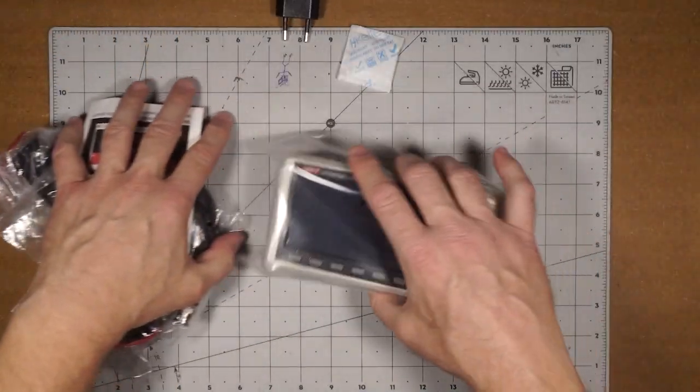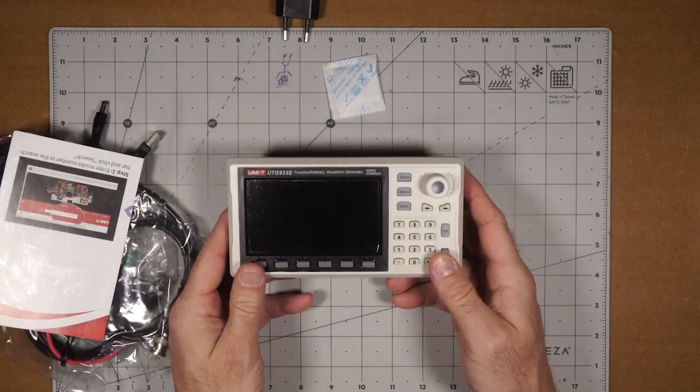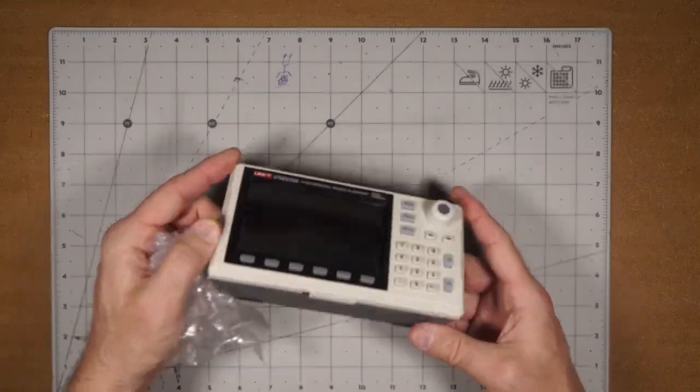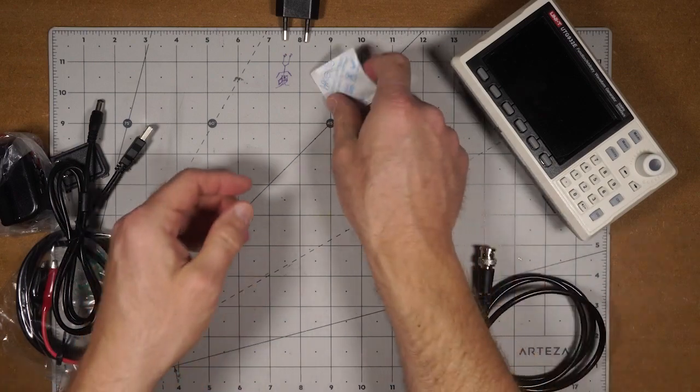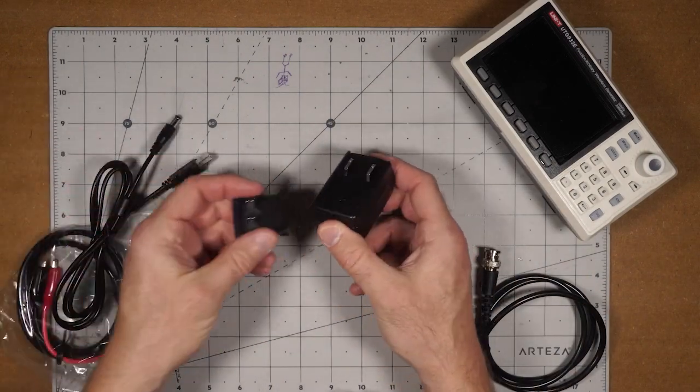Jeremy Cooke here from Embedded Computing Design. Today I'll be looking at a UTG-900E-series portable function generator by Unitrin, specifically the UTG-932E. It's a compact but nicely featured unit available for around $150.